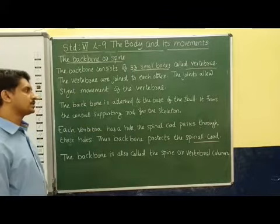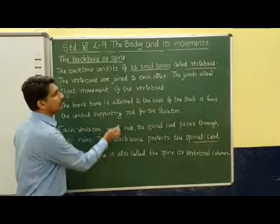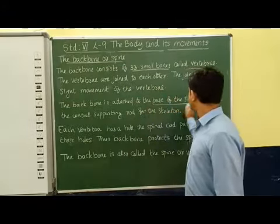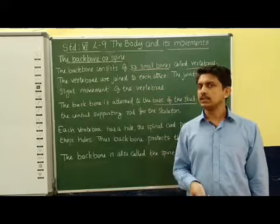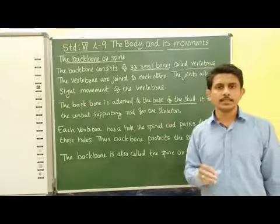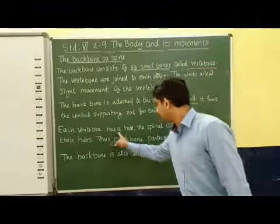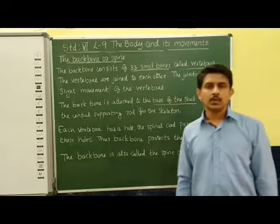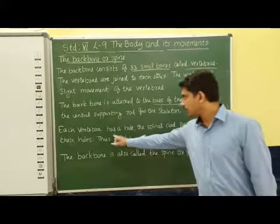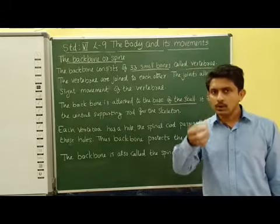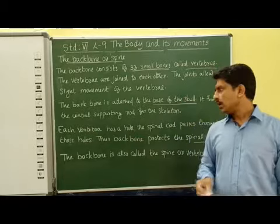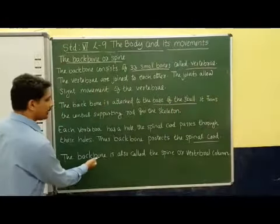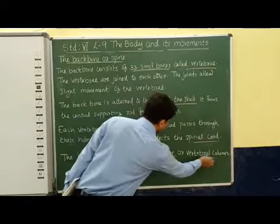The backbone is attached to the base of the skull, and it forms the central supporting rod for the skeleton. Backbone is attached to the base of the skull and it acts as the central supporting rod for the skeletal system. Each vertebra has a hole, and the spinal cord is passed through these holes, so the backbone protects the spinal cord. We also call this backbone a component known as the spine or vertebral column.